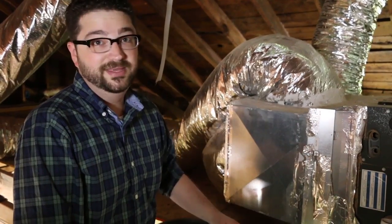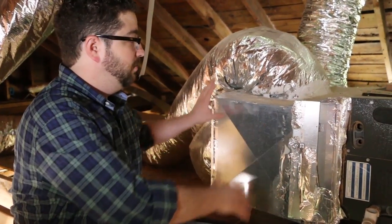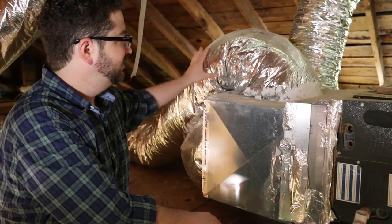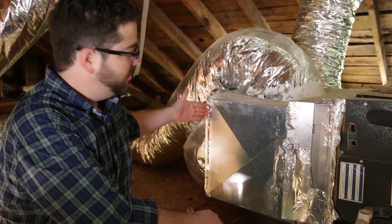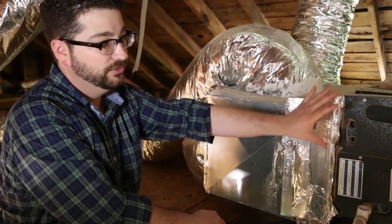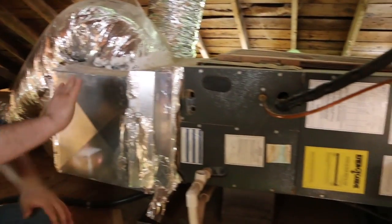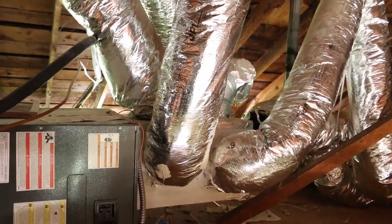Here is one of the really bad things about the system. So this is the return plenum on the system. What that means is this is where the air is coming from the house, being drawn into the system, ideally filtered, and then heated or cooled through the heat pump, and then going out the other end through the supplies and being supplied throughout the house.